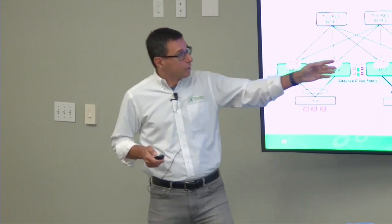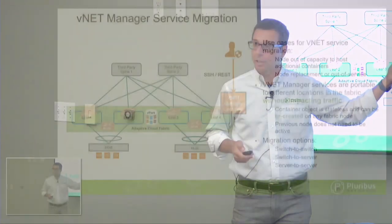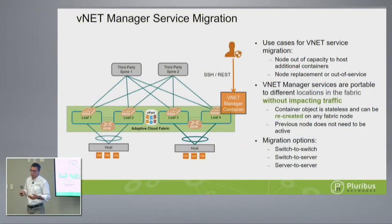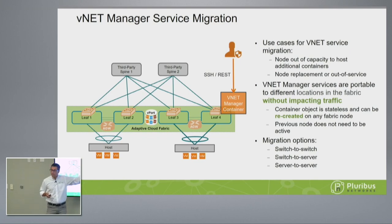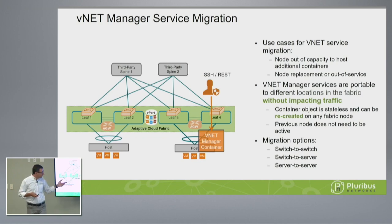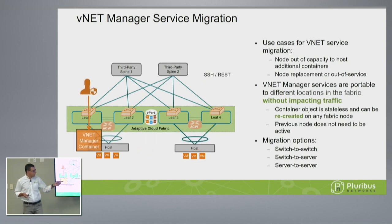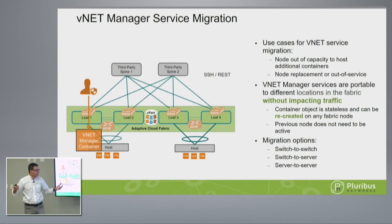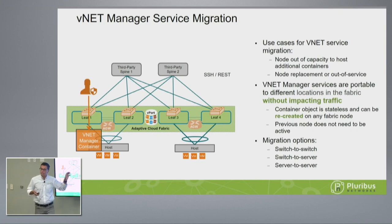This is a stateless container that can sit on a Pluribus switch or on a server. Because it's stateless, if the container dies or the node hosting it dies, there is no impact on the network — it's just a stateless portal. You lose connectivity to your environment, but it's not traffic-impacting. I can recreate this container anywhere in the fabric because the state is in the fabric. The vnet knowledge is distributed in the fabric, and I can recreate the container on a physical host, server, or another switch in the fabric in a matter of seconds.